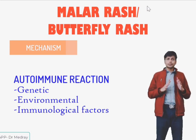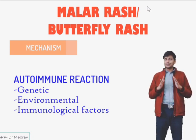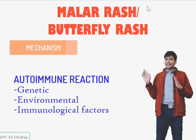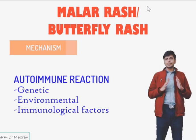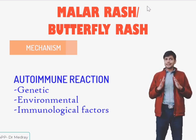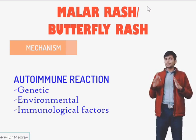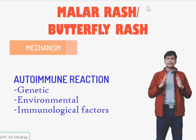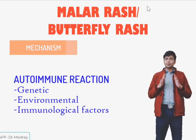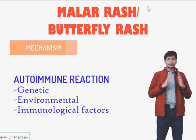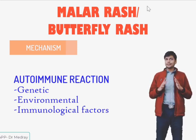The genetic factor which contributes to malar rash is absent, deficient, or ineffective complement. Because of absent, deficient, or ineffective complement, the apoptotic cell which is produced is not degraded, and this apoptotic cell can cause autoimmunity. The environmental factor is sunlight.